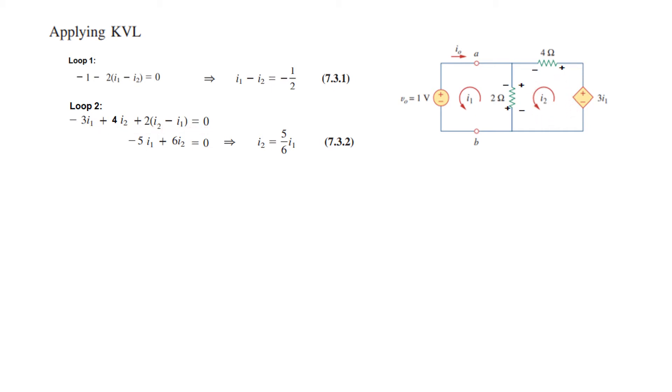I hope you will follow. Simplifying we get I₂ = 5/6 I₁. Now we will replace this I₂ with this value so we can calculate I₁. Putting in the value of I₂ here, simplifying, we get I₁ = -3 amperes.